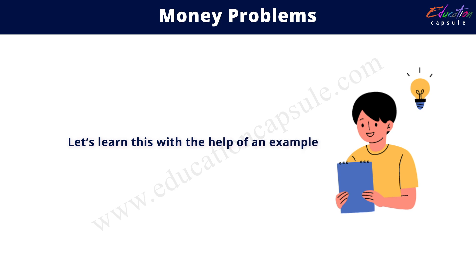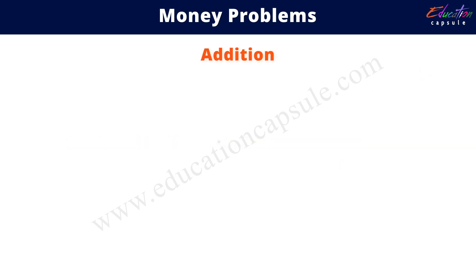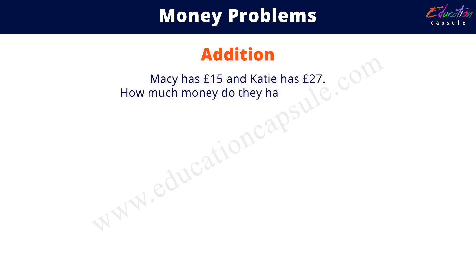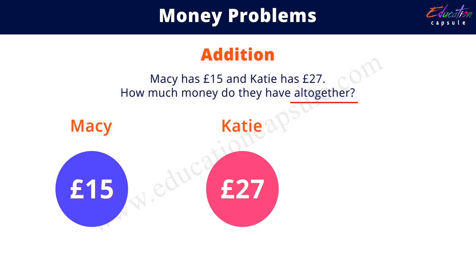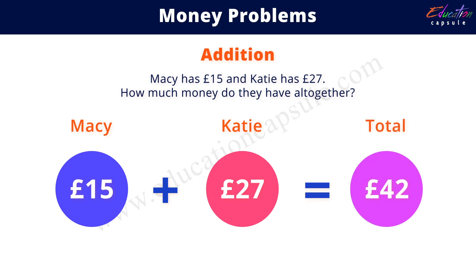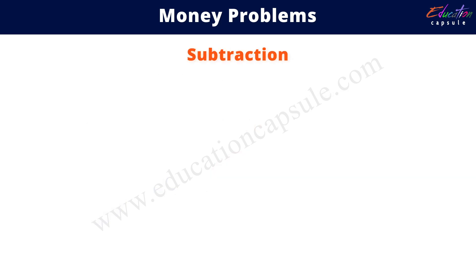First is addition. Let's say Macy has 15 pounds and Kitty has 27 pounds. How much money do they have altogether? The amount of money with Macy is 15 pounds and with Kitty is 27 pounds. The word 'altogether' suggests we add the amounts, so the total amount is 15 pounds plus 27 pounds, which equals 42 pounds.